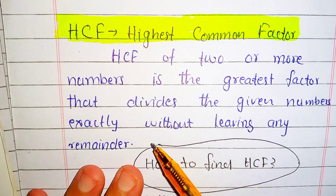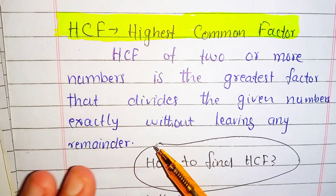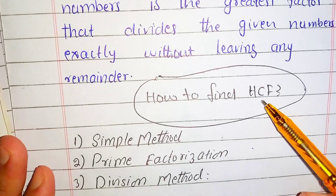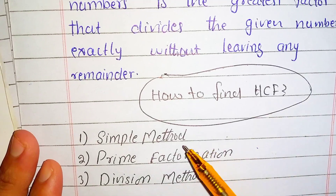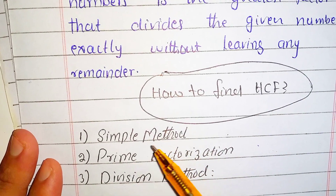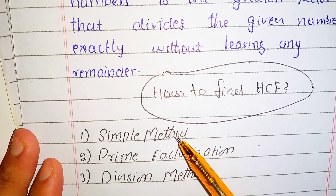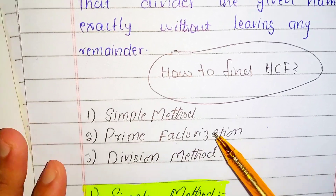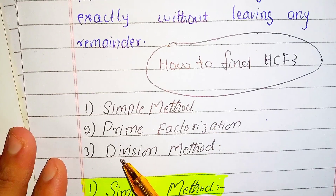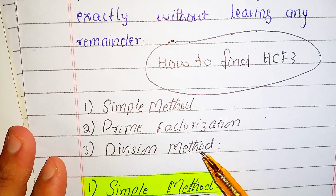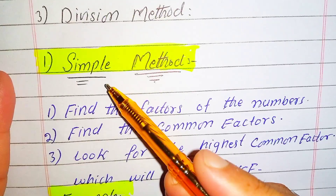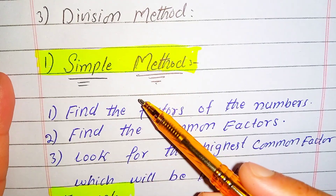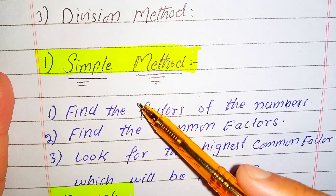Without leaving any remainder. How to find HCF? There are three methods: the first is the simple method, the second is the prime factorization method, and the third is the division method. The simple method is a very shortcut and simple method.